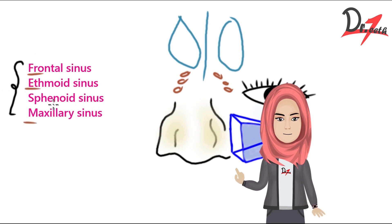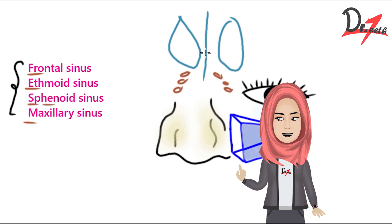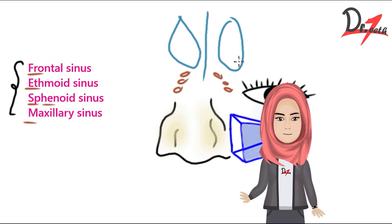The one left is the sphenoid. From this front view we are unable to see the sphenoid because it's located in the sphenoid bone, which is a little posterior to this area, so it's difficult to visualize from this side. I'm going to switch to another view.